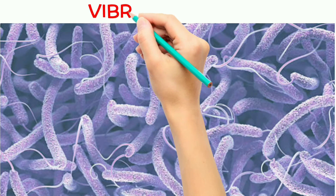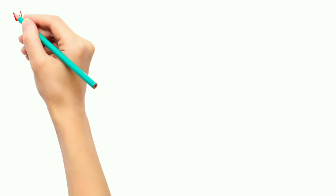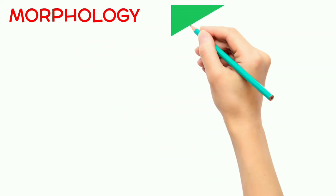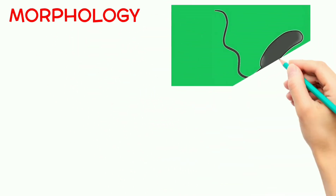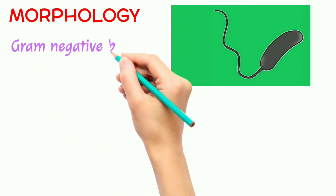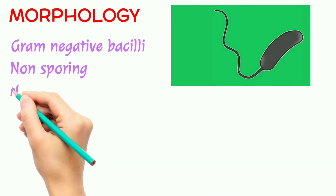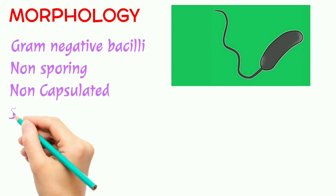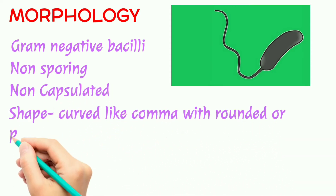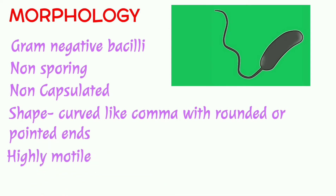Welcome to Dynamic Medicals. Today in this video I am going to talk about the bacteria Vibrio cholerae. Let's see the morphology of Vibrio cholerae. It is a gram-negative bacteria. Its shape is bacilli, non-sporing, non-capsulated, and curved like a comma with rounded or pointed ends.